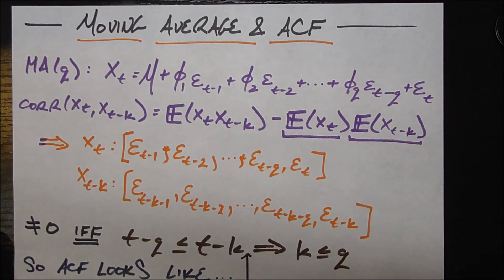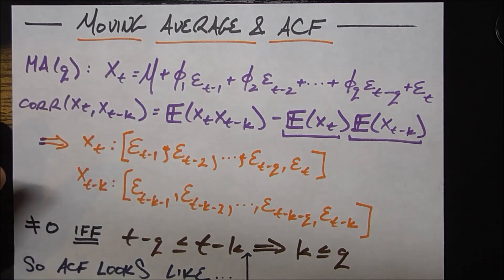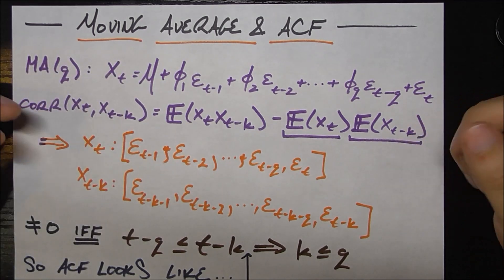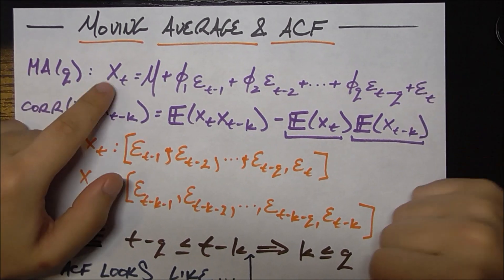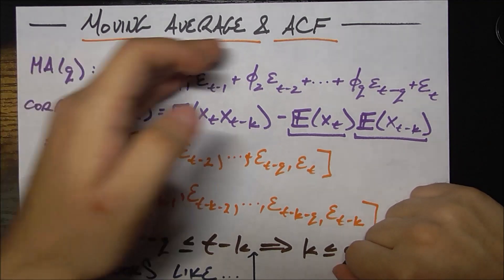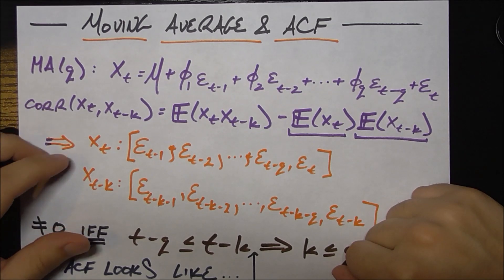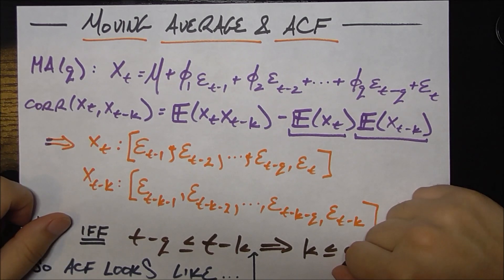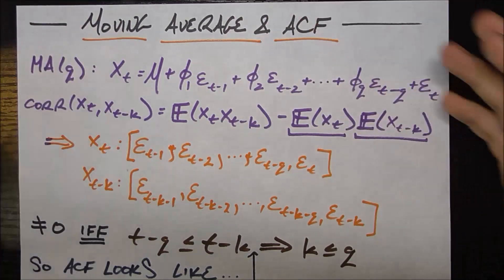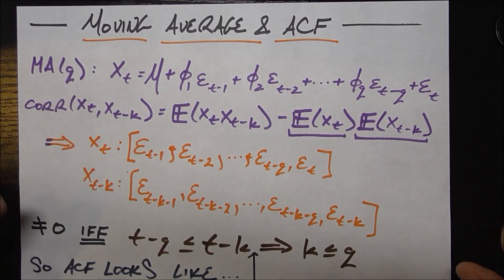In this video, I want to dive a little bit deeper into the moving average model in time series analysis. More specifically, I want to figure out if, given some random time series x_t, it's a good candidate to be modeled by the moving average model. And if it is, should we use a moving average one, moving average two, or MA(Q) in general — how do we know what's the right moving average model?